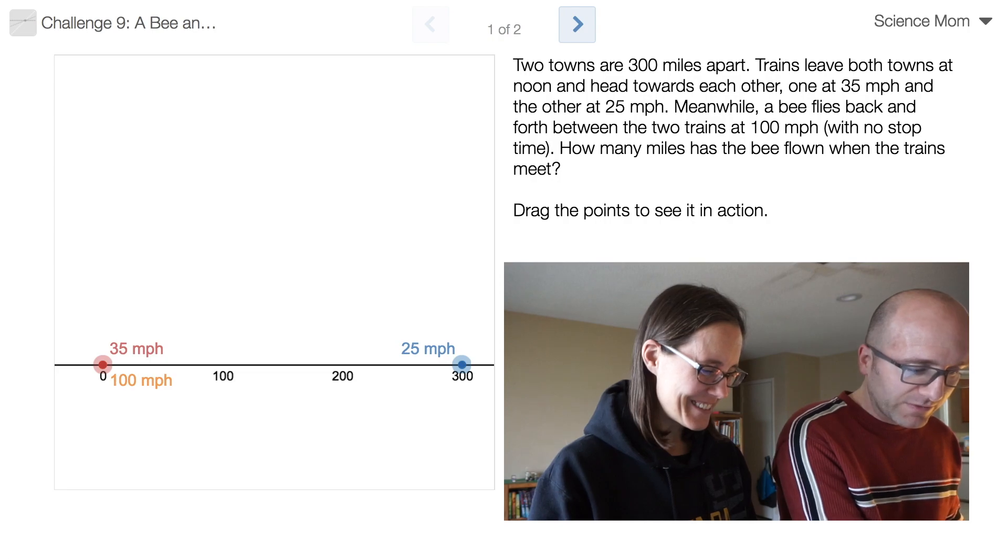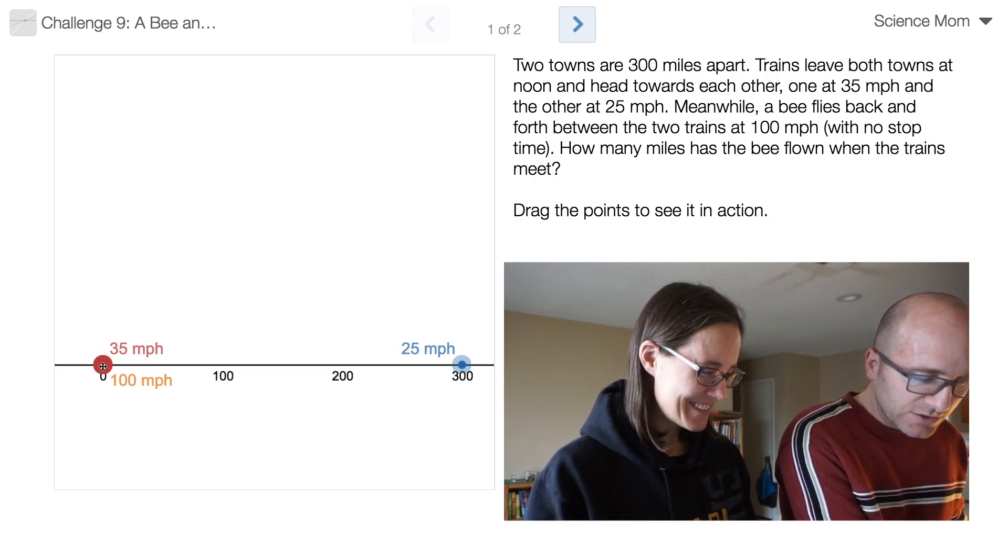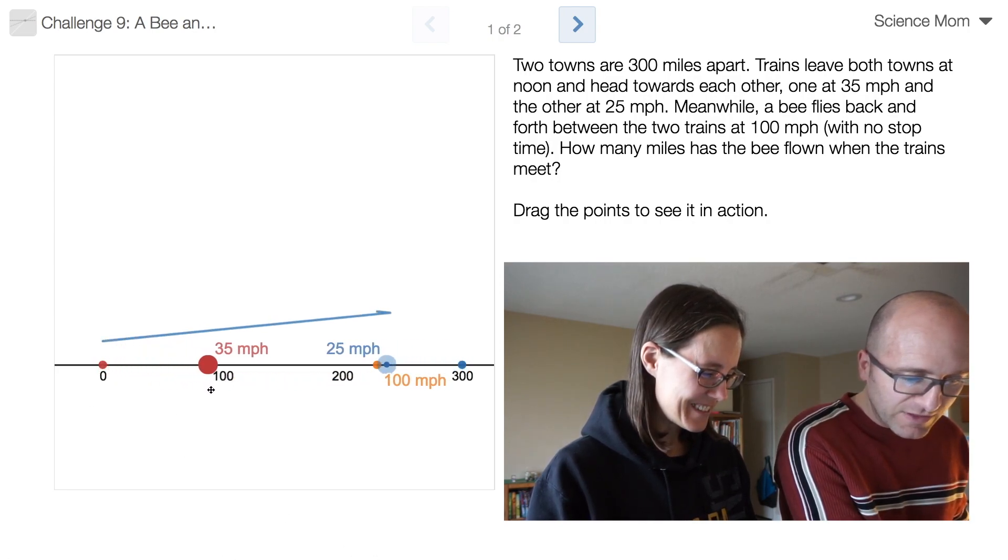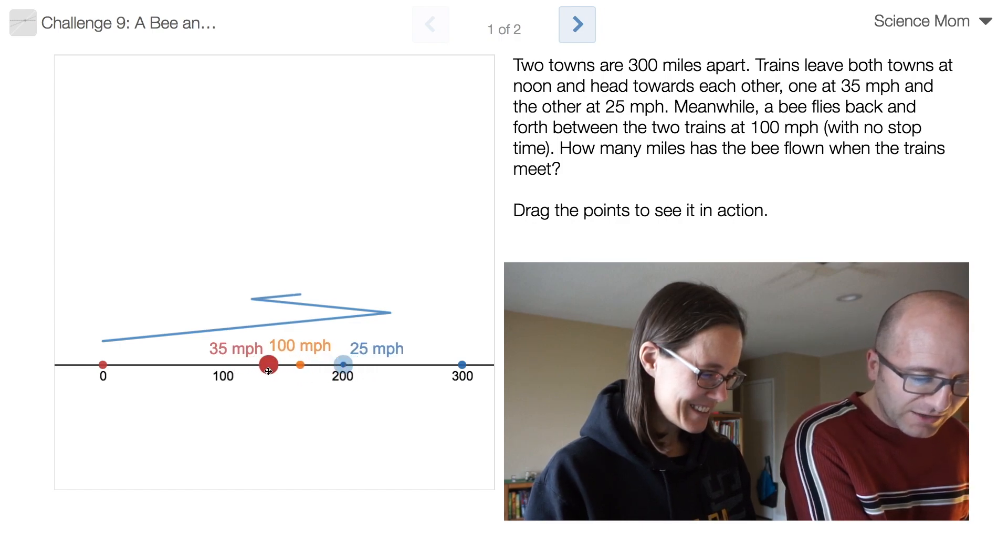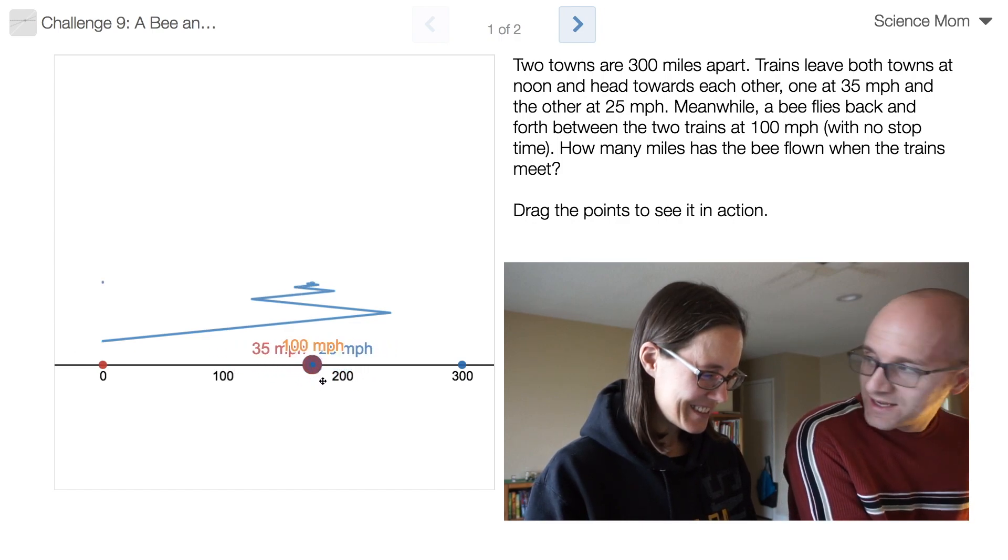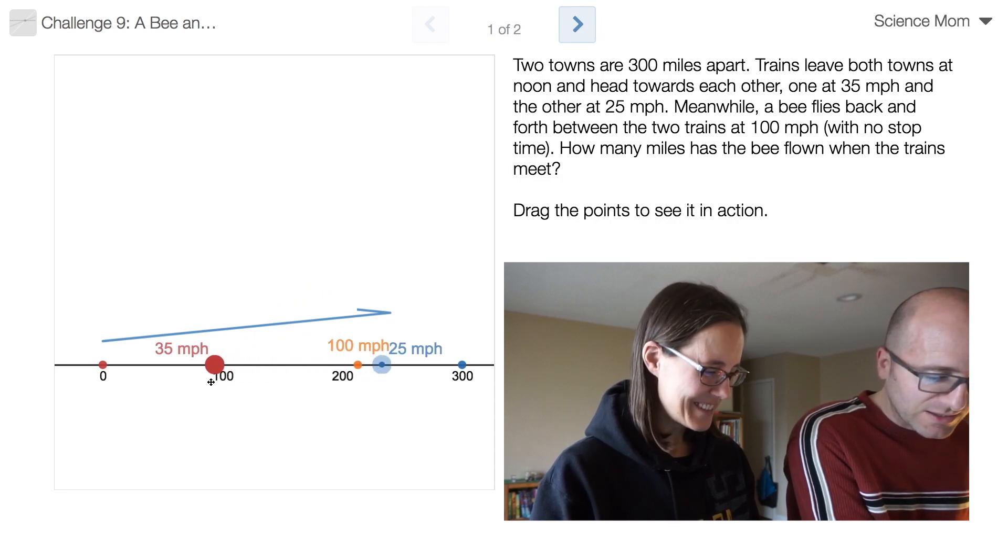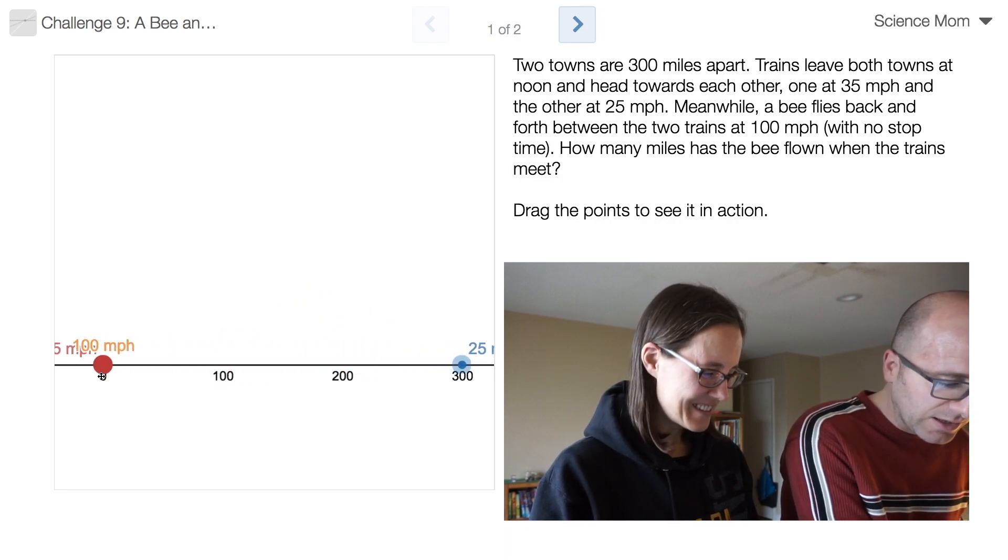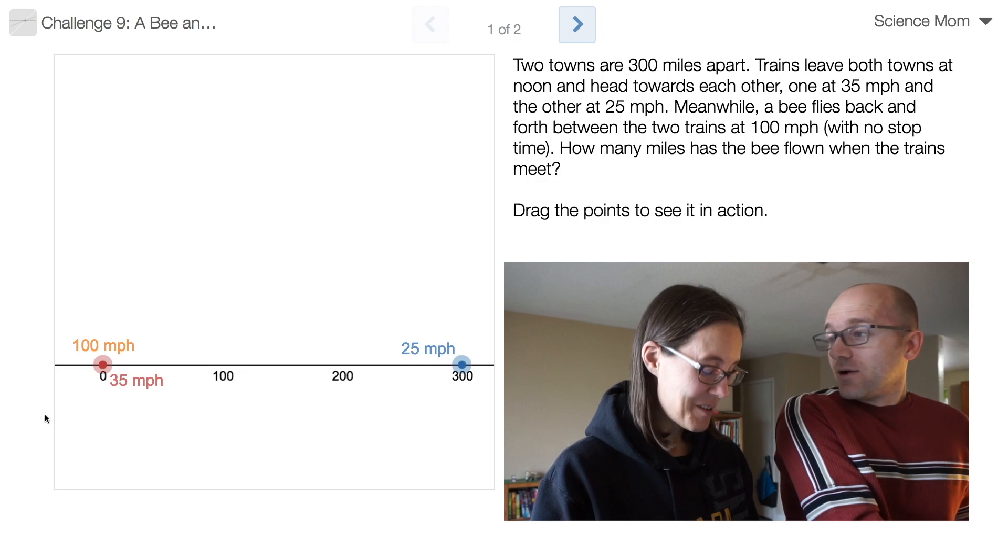Just to give you a bit of an illustration here, if I drag this, you see the bee's flight, it goes back and forth, and it actually goes back and forth infinitely many times before they meet, because it's traveling at a faster speed than their combined speed.